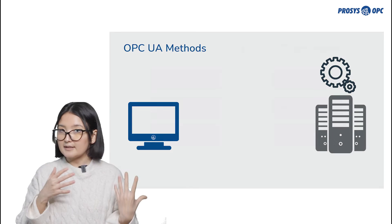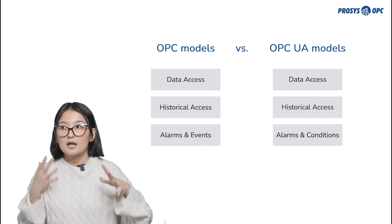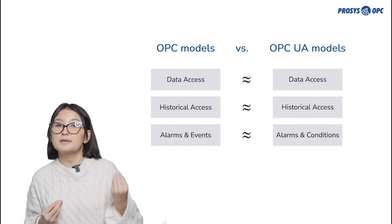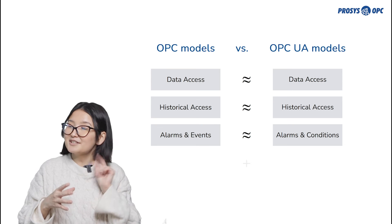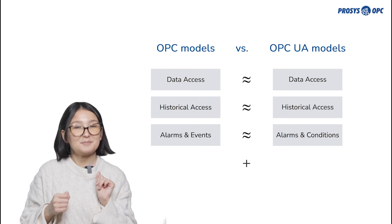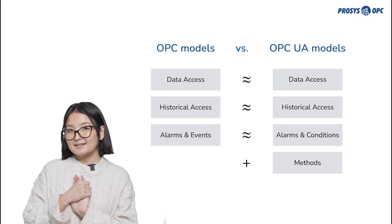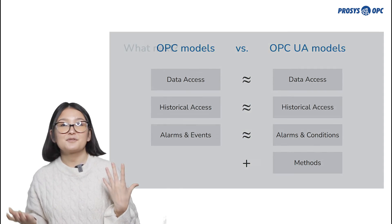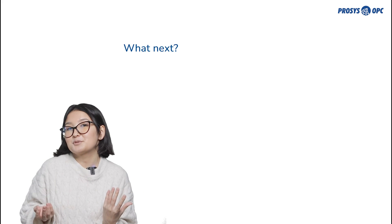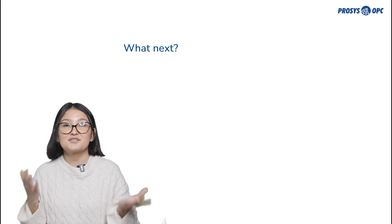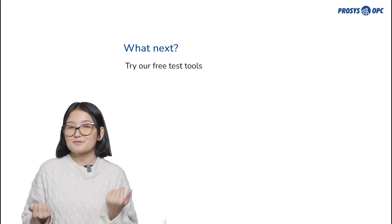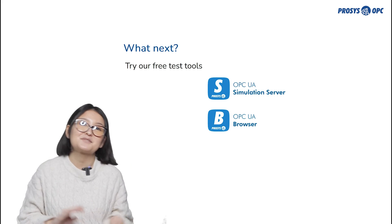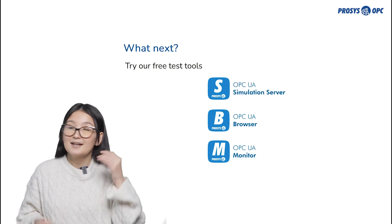Overall, at a glance, OPC UA has basic models that are pretty similar to the ones in OPC Classic, with only one small addition: OPC UA Methods. If you'd like to try the functionality or play with those models, you can always try our free test tools — for example, Process Simulation Server, Process OPC UA Browser, or Process OPC UA Monitor.